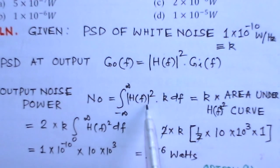That is from minus infinity to infinity |H(f)|² k df, since k is the input PSD. Since k is a constant, this is the area under |H(f)|² curve.